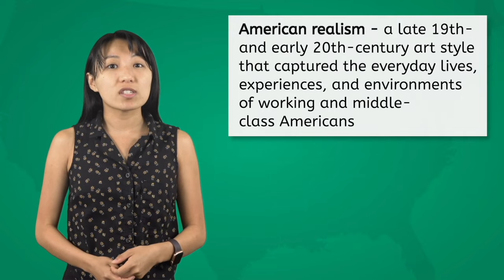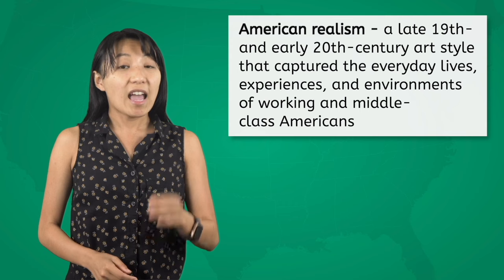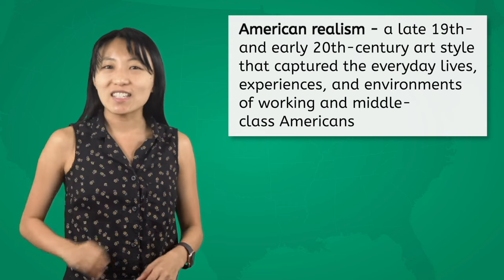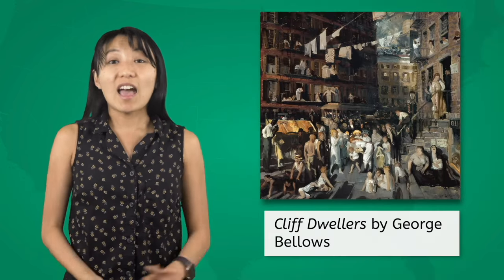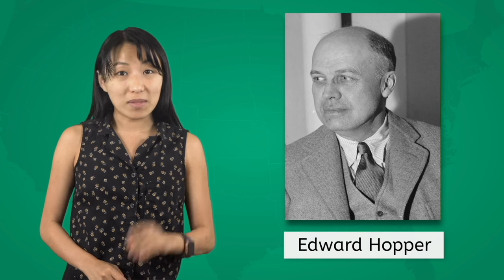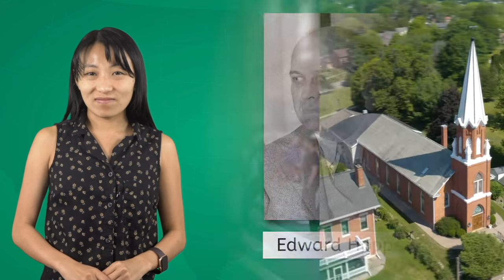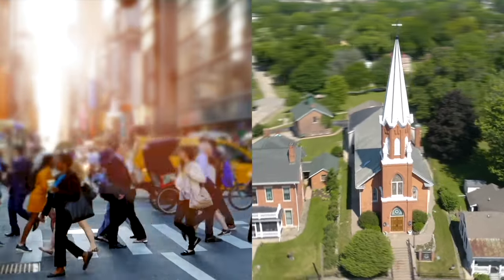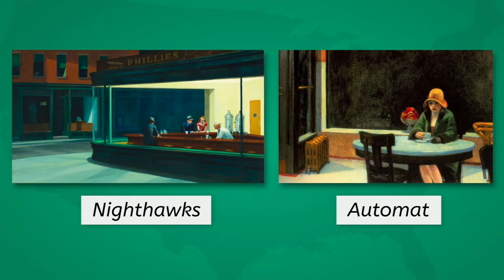Our next American artist embodied the tenets of a movement known as American Realism — an art style prominent at the end of the 19th and beginning of the 20th centuries that strived to capture the everyday lives, experiences, and environments of working-class and middle-class Americans with a high degree of detail and accuracy. As industrialism transformed the American landscape and more people migrated to urban cities for work, many artists felt less inclined to paint romantic landscapes and instead captured the realities of everyday life. One of these artists was Edward Hopper, born into a middle-class family in 1882 in Nyack, New York. Hopper trained as an illustrator before moving to New York City to study art, where the bustling metropolis significantly contrasted with his quiet hometown.